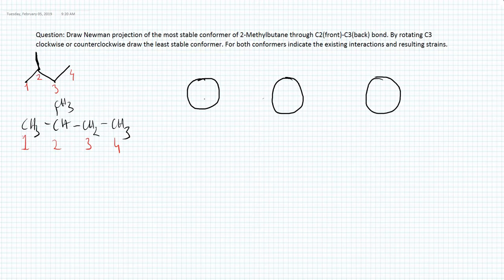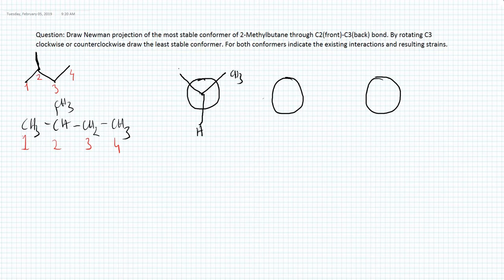Let's start drawing the Newman projection. The front carbon is C2, represented by a line in the middle of the circle. The circle represents the back carbon, C3. From C2, we know we have two methyl groups and one hydrogen. We can place hydrogen at one position, methyl at another, and methyl at the third — this placement is arbitrary.